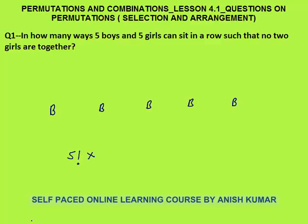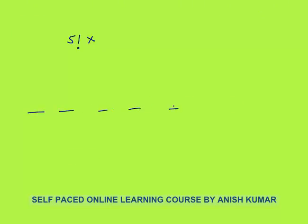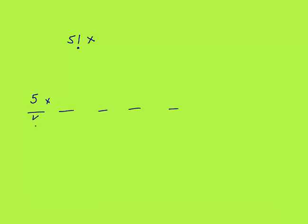Let me explain why. We have 5 positions. The first position can be filled in 5 ways, the second in 4 ways, the third in 3 ways, then 2 ways, and finally 1 way — giving 5 factorial ways for the boys to sit.